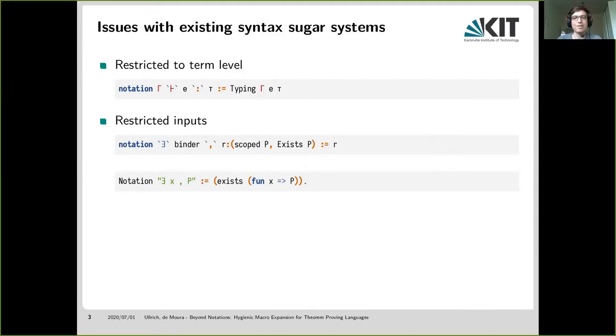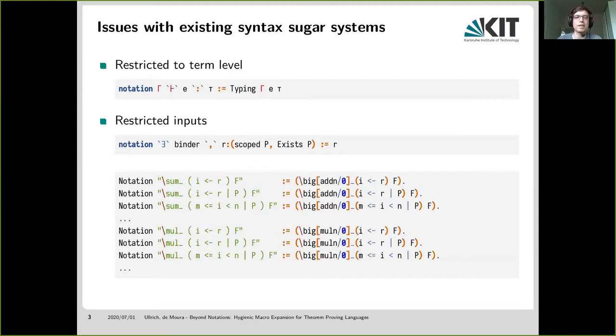And with the fundamental restriction, again, that you cannot abstract over arbitrary syntax kinds. So when the mathematical components library in Coq, for example, defines big operators like summation and multiplication, they actually have to repeat the translation rules for all the ways you can write down indices in these operators for every single operator, because they cannot abstract over that.